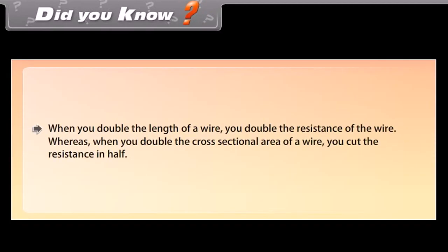Did you know? When you double the length of a wire, you double the resistance of the wire. Whereas, when you double the cross-sectional area of a wire, you cut the resistance in half.